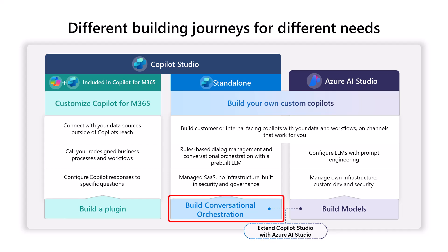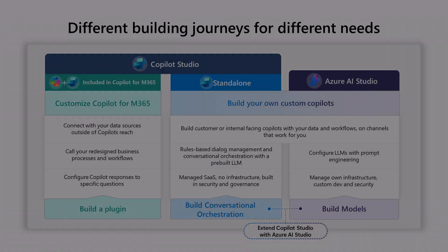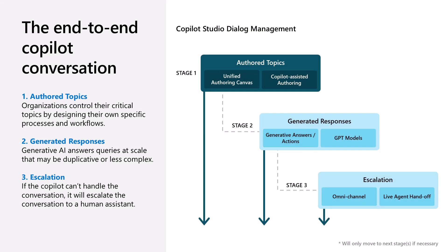Conversational orchestration, or dialogue management, is probably the most underrated concept that people don't understand in the conversational space. It's where you as the author of the copilot can really get control of everything. So it means that I can say: I understood what you said, but I just want to answer 'I don't know.'